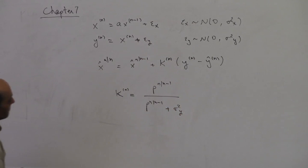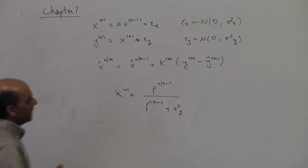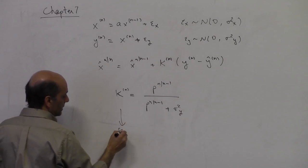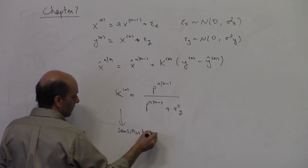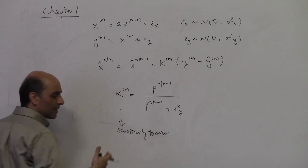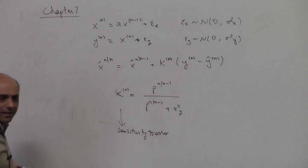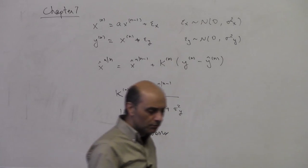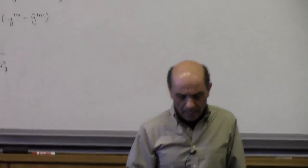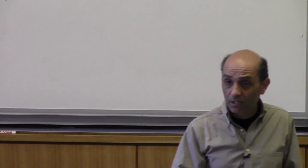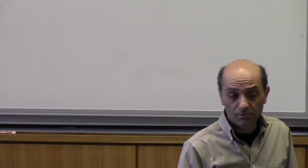For a scalar system, the Kalman gain k of n equals the ratio between my prior uncertainty and my observation uncertainty — specifically p of n given n minus 1, divided by p of n given n minus 1 plus sigma squared_y. So k of n is really what we might call my sensitivity to error — it tells me how much I'm going to learn from error. Today's lecture is about this gain k.